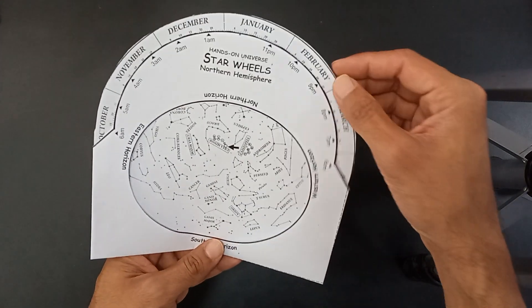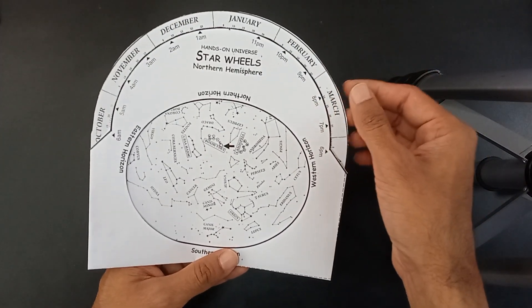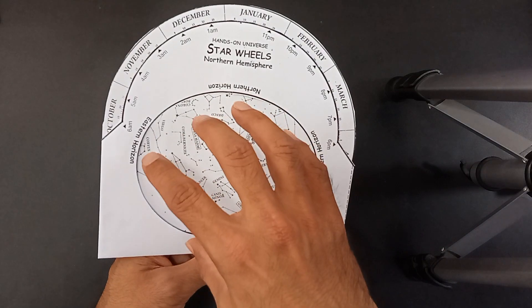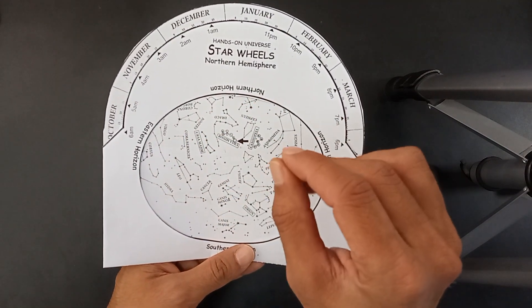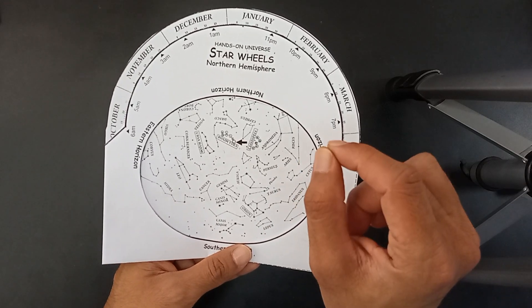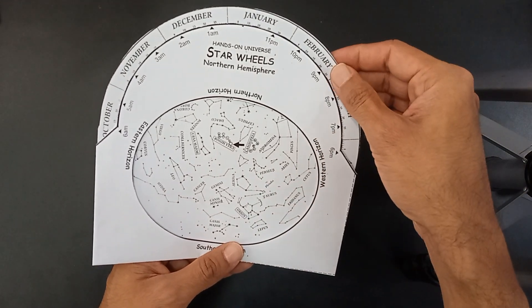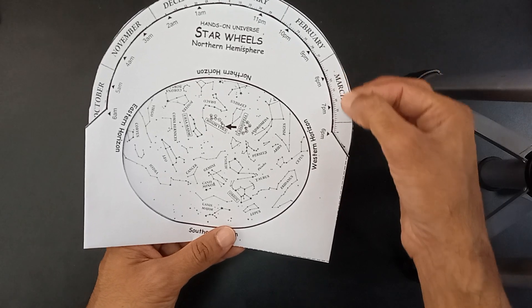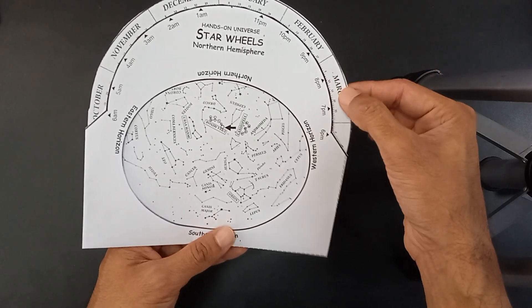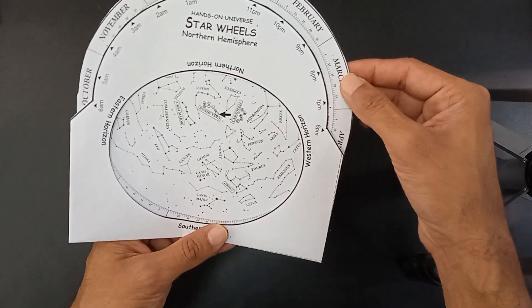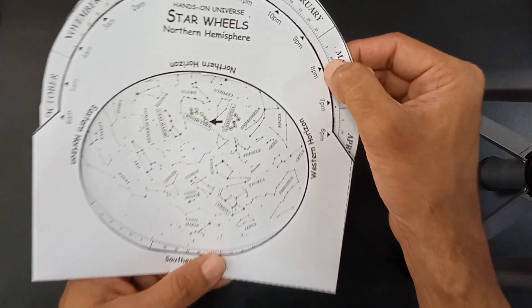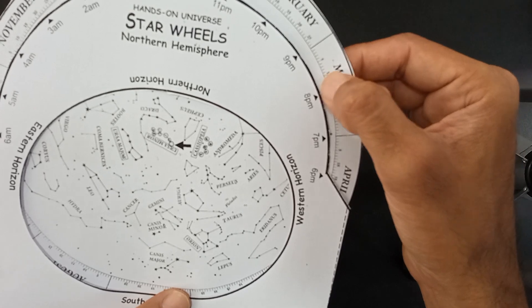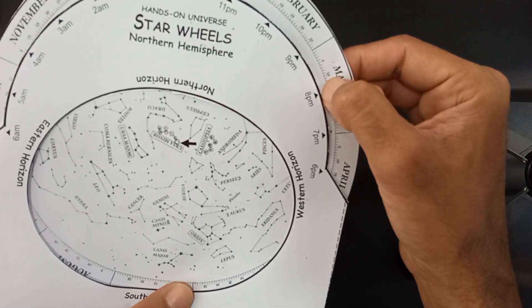So suppose you are out there in the night sky and you want to see how your night sky is looking like at a particular time, at a particular date, in a particular month. So let's say today is March. This is March. March month is going on. Today is 10th March. So I am looking at the 10th March over here. If you look at it, you will see the 10th March over here.